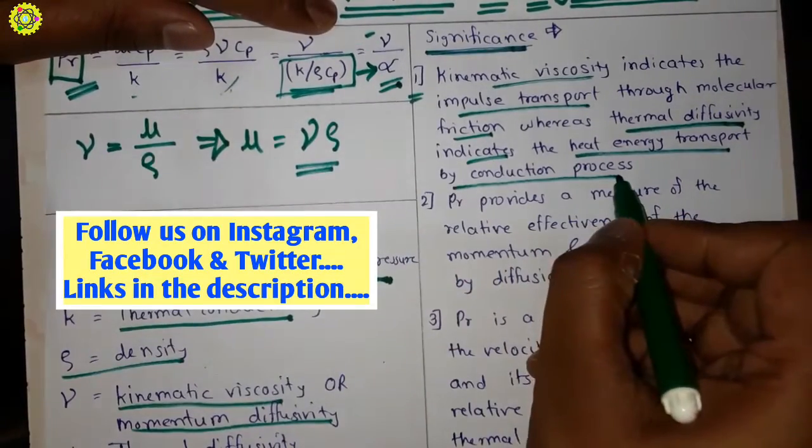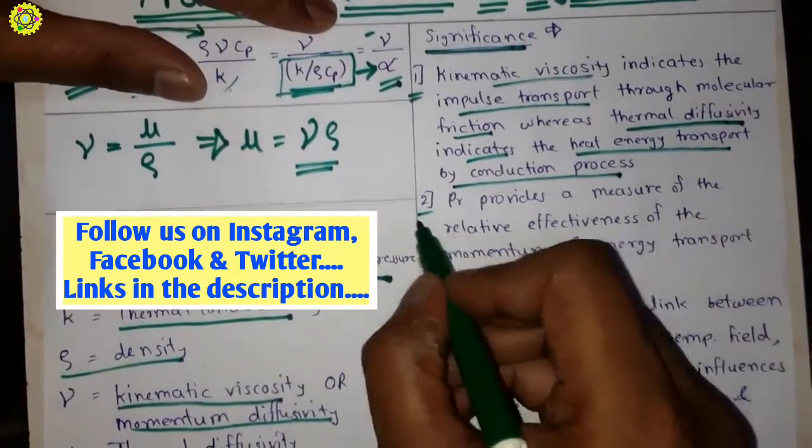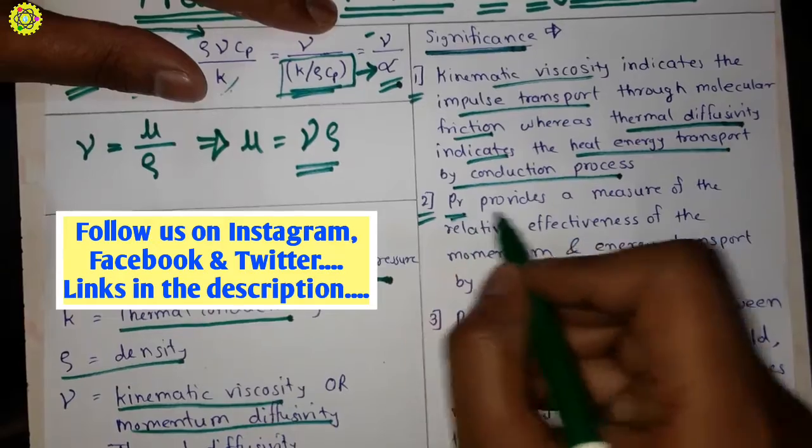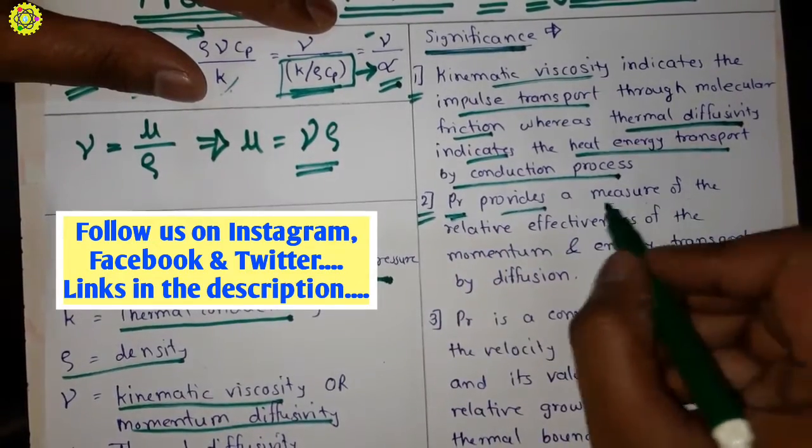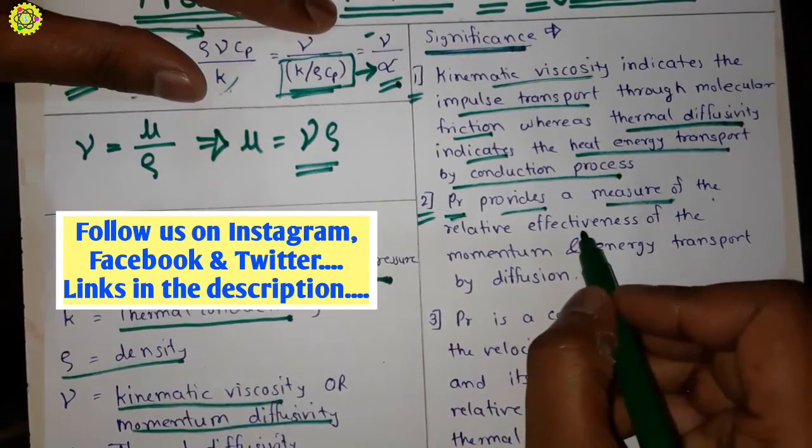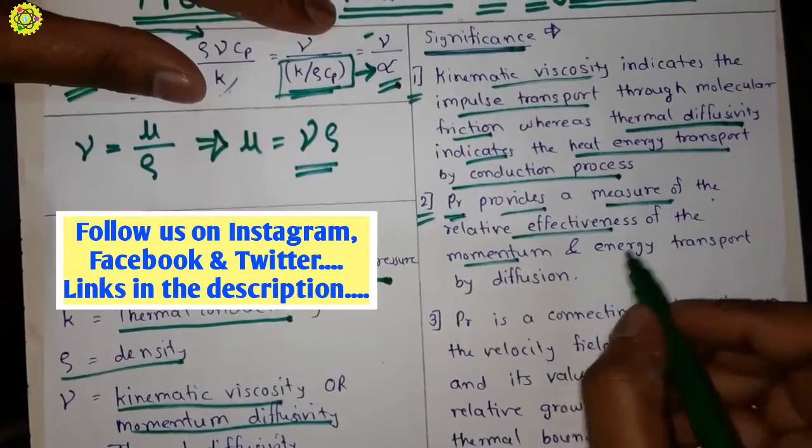Second significance is: Prandtl number provides a measure of the relative effectiveness of the momentum and energy transport by diffusion.